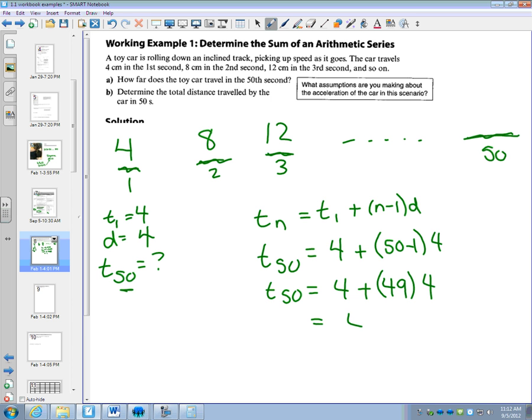So let's do some math here. I have 4 plus, well, 50 times 4 is 200, but I'm going to subtract, but that's 4 less than that. So that's 196. So that means 200. So in the 50th second, it's gone 200. That's a lot of centimeters. Oh, that's 2 meters in one second. Wow. So that's part A.